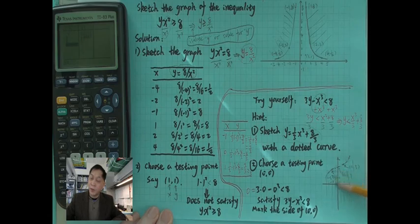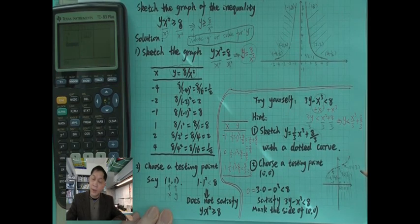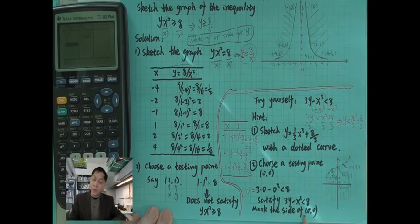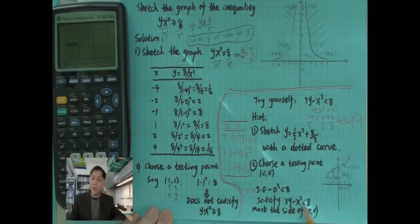So that means all the points on the side of the origin are going to satisfy this inequality. So you need to shade the areas below this dotted curve. So here I wrote mark the side of 0, 0.